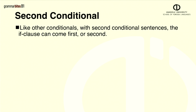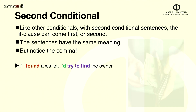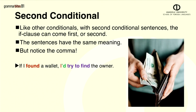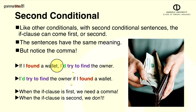Like other conditionals, with second conditional sentences the if clause can come first or second with no change in meaning, but notice the comma. If I found a wallet, I'd try to find the owner. I'd try to find the owner if I found a wallet. The two sentences have the same meaning, but in the first sentence we need a comma. In the second sentence, we don't.